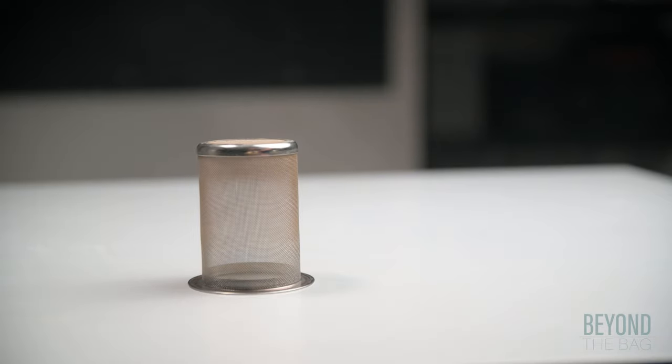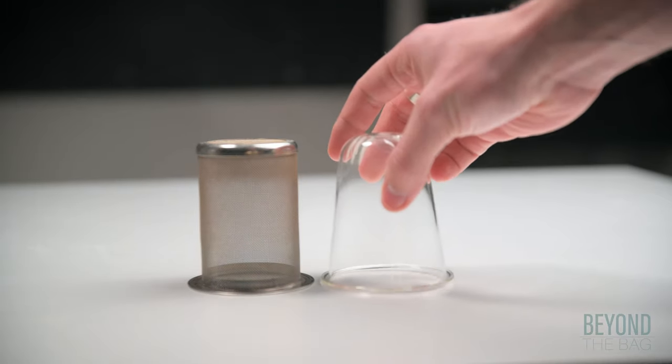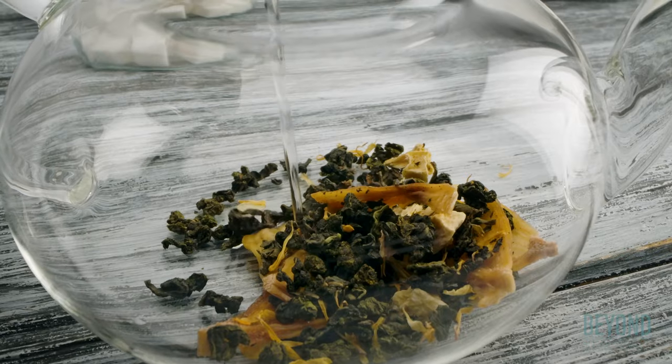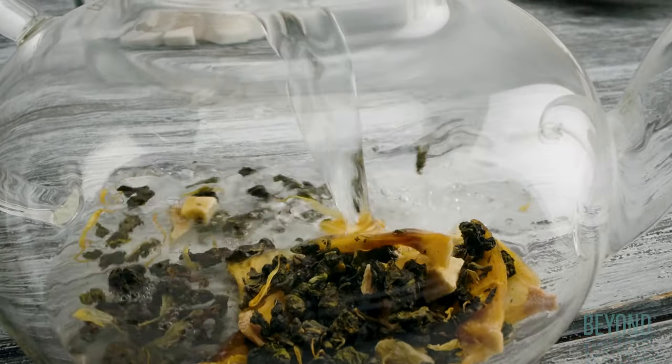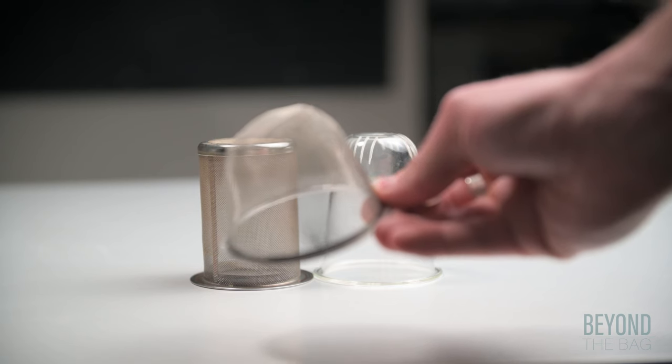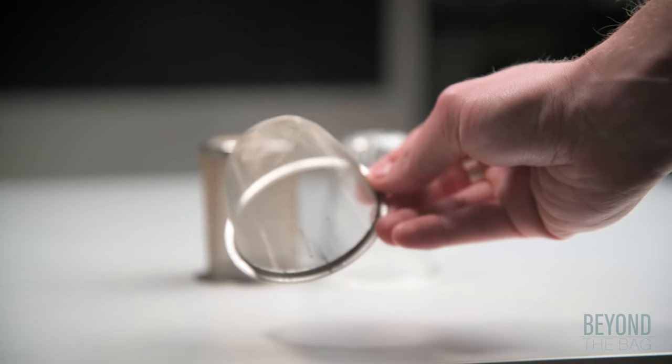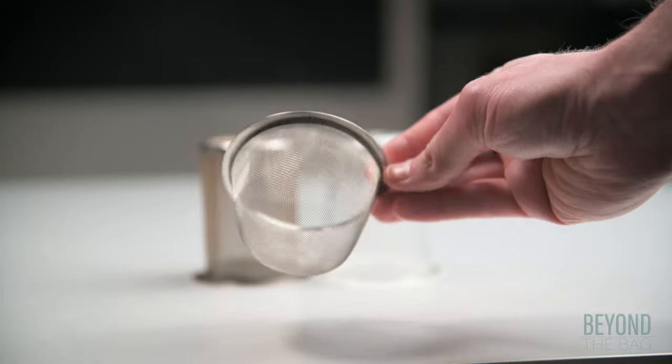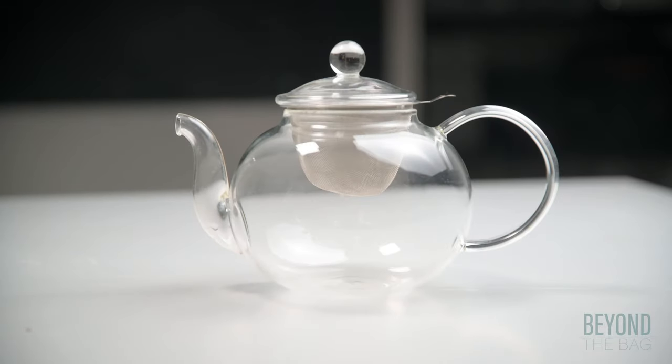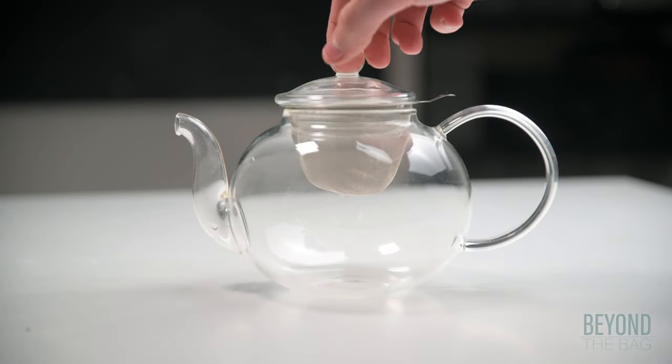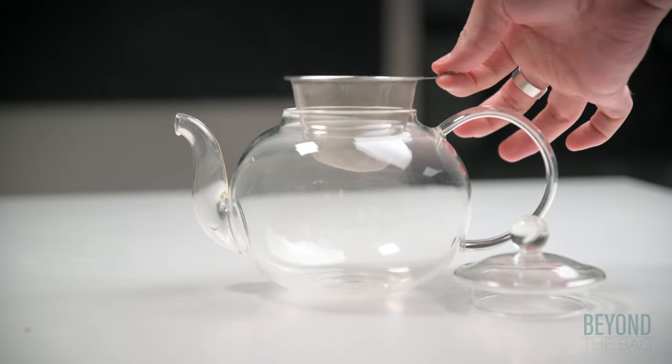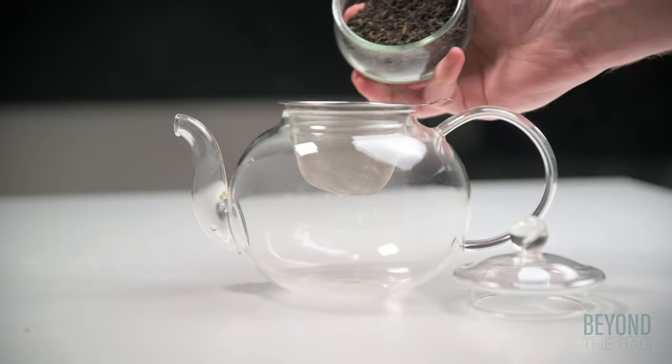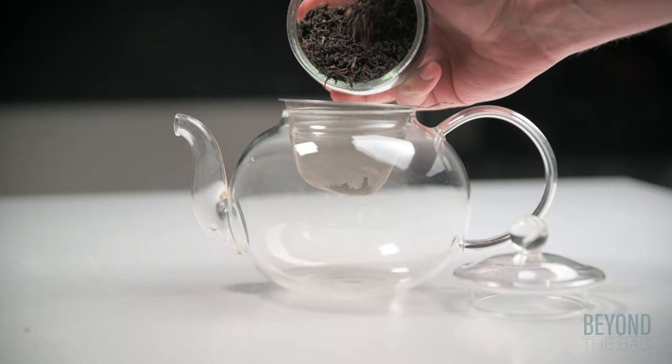The next thing you are going to want to consider is infusers. Infusers are vessels to hold the tea while it is steeping. Some teapots don't come with them but they are a highly useful feature not to be missed. What you want is something that will do a good job of both allowing the water to circulate and restrain the leaves at the same time. This is a delicate balance to strike but the best application I have seen has been stainless steel mesh infusers.